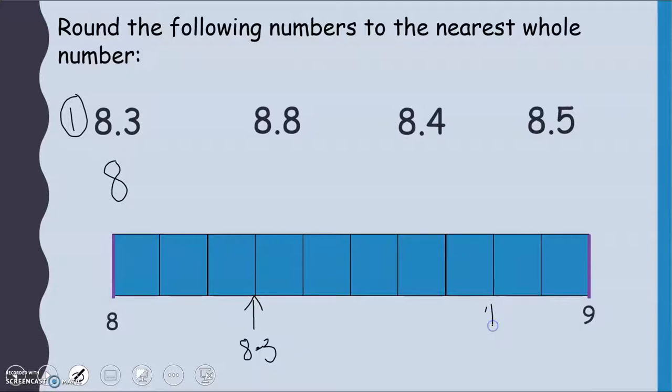8.8 however is going to be here on our diagram and I hope you can all agree with me that that is much closer to 9. So we would round 8.8 up to 9. And that's what I was talking about here. Our whole number is our units, so we are looking at our tenths. 8.8 is greater than 5 so we are rounding that 8 up to a 9.